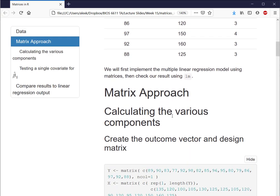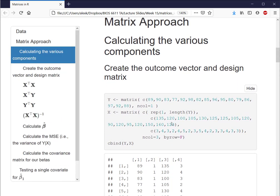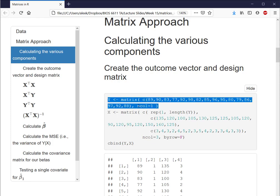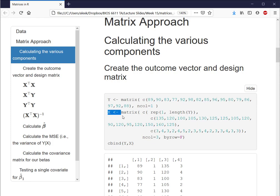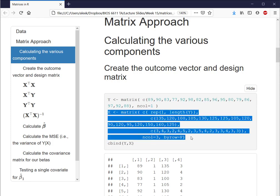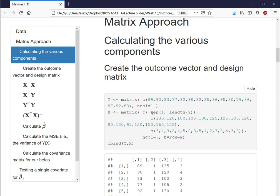So let's start by calculating the various components for our model. The first thing we do have to do is create the outcome vector and the design matrix to use for our calculations. So here we see we're creating a matrix which we're specifying as a column matrix with one column for our outcome Y of that systolic blood pressure. And we have our design matrix X here. We have columns for our intercept, the weight in ounces, and the age in days.